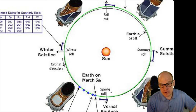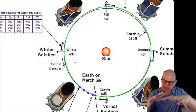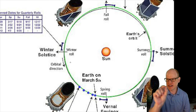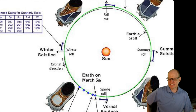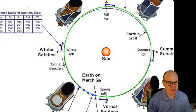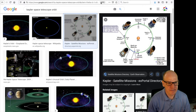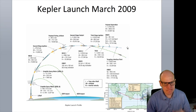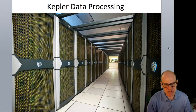Kepler's orbit is slightly elliptical, so its distance relative to Earth changes. Interestingly, the spacecraft ended up in a higher orbit than planned despite expending less fuel than expected — a puzzling outcome where less fuel produced a more energetic orbit.